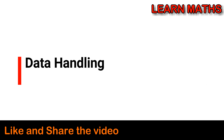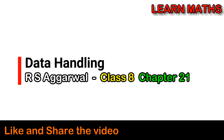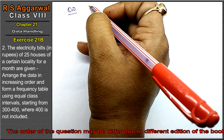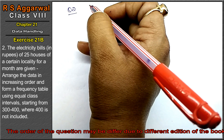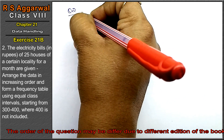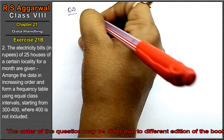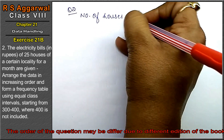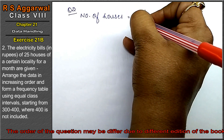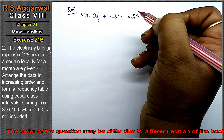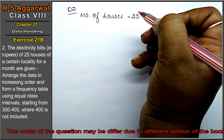Let's do question number 2 of exercise 21B, that is data handling. Question number 2 is: the electricity bill of 25 houses of a certain locality for a month are given below.